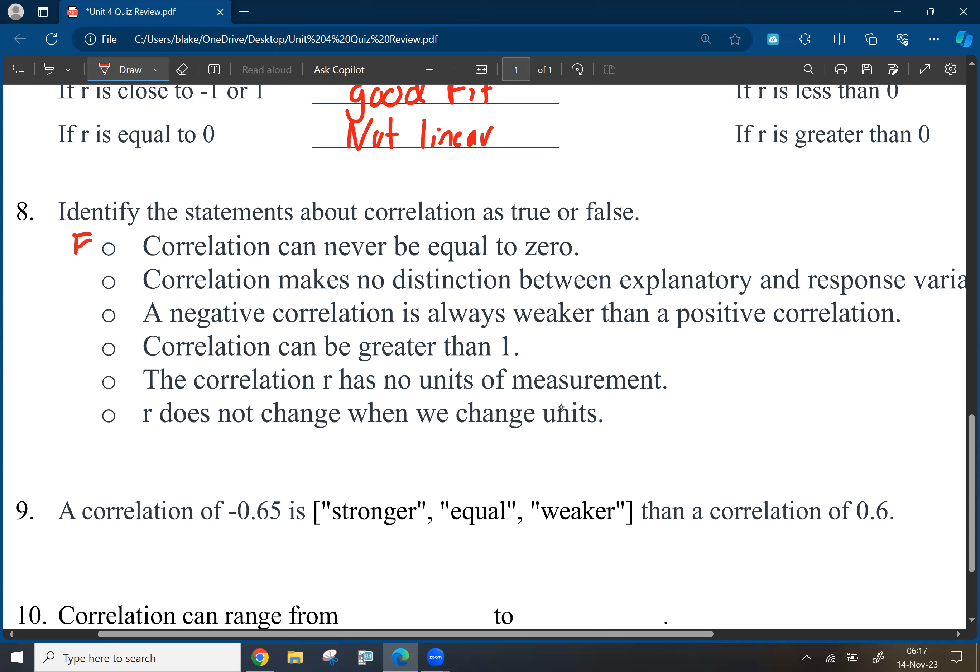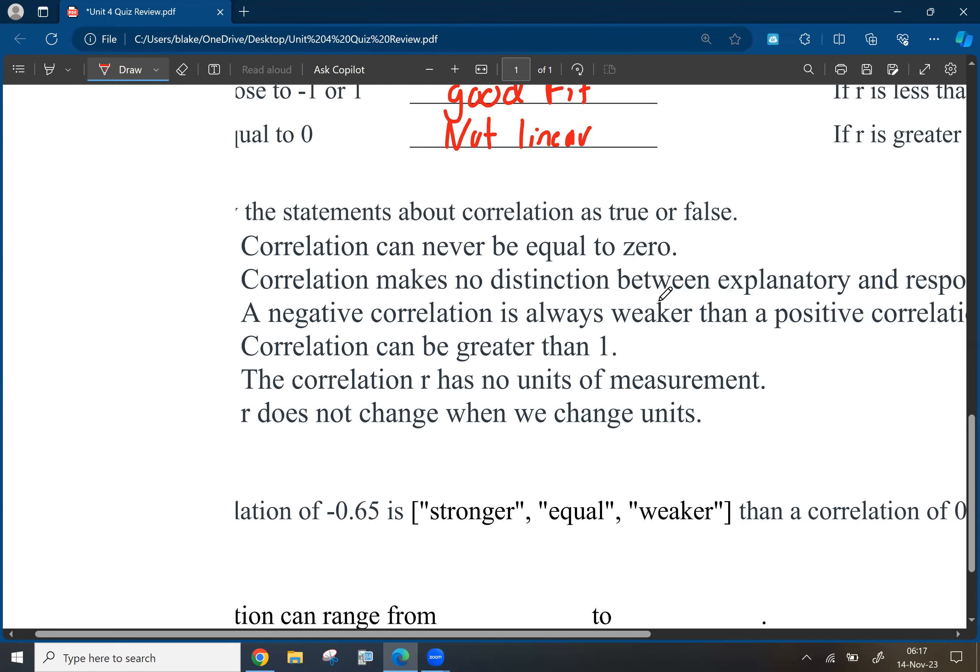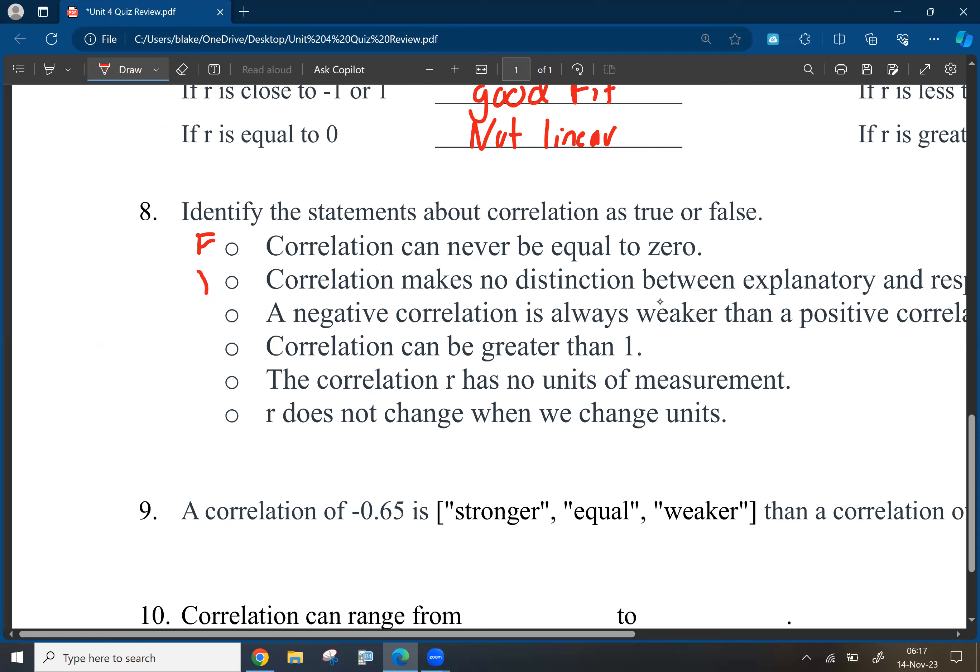Correlation makes no distinction between explanatory and response variables. We talked about this just this week. That is true. You could switch the explanatory and response variables around, and it doesn't change the correlation. That is true. A negative correlation is always weaker than a positive correlation. That is false. They could be equally strong. You can have a perfect negative correlation. You can have a perfect positive correlation and anything in between.